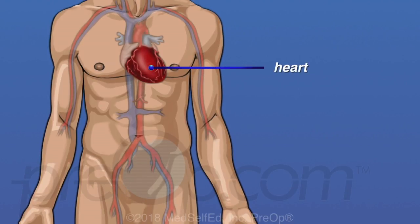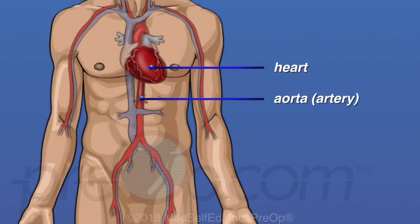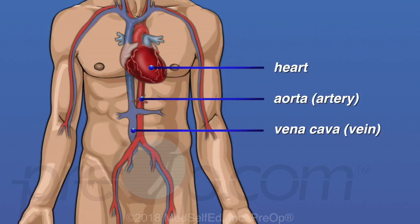Your heart is in the middle of your chest under your ribs. It is the muscle that pumps blood to the rest of your body. Blood flows through tubes called blood vessels. The aorta is the largest artery in the body and the blood it carries is rich with oxygen. Veins are a different type of blood vessel that carry blood back to the heart. The vena cava is the largest vein in the body and carries oxygen-poor blood back to the heart.